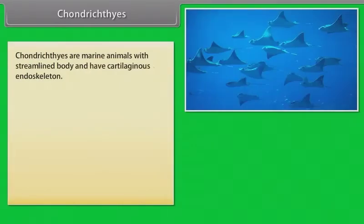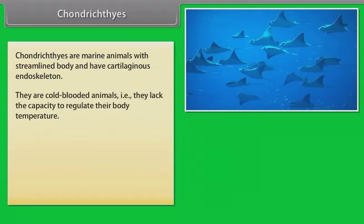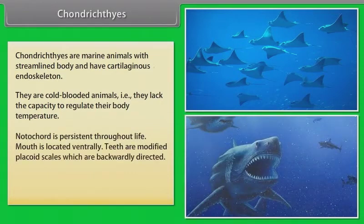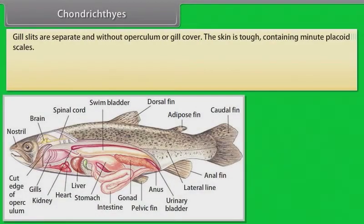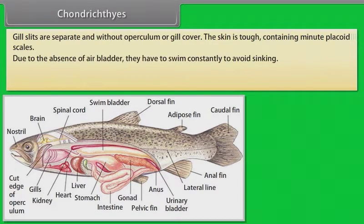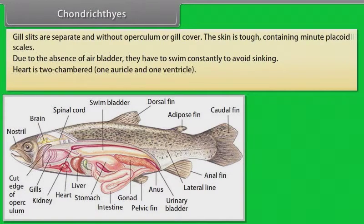Chondrichthyes are marine animals with streamlined body and have cartilaginous endoskeleton. They are cold-blooded animals — that is, they lack the capacity to regulate their body temperature. Notochord is persistent throughout life. Mouth is located ventrally. Teeth are modified placoid scales, which are backwardly directed. Their jaws are very powerful. These animals are predaceous. Gill slits are separate and without operculum or gill cover. Their skin is tough, containing minute placoid scales. Due to the absence of an air bladder, they have to swim constantly to avoid sinking. Heart is two-chambered: one auricle and one ventricle.